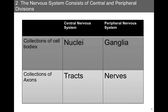In the central nervous system, collections of cell bodies, or soma — these can be gray matter — are called nuclei, whereas collections of cell bodies are called ganglia in the peripheral nervous system. Collections of axons, which are lighter in color because of all that myelin — it has a whitish color since it's a phospholipid — are called tracts in the central nervous system, but they're called nerves in the peripheral nervous system.